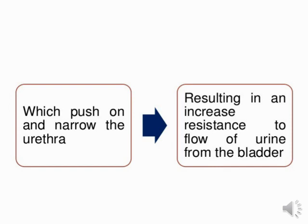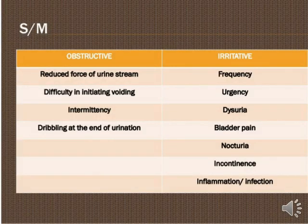Now we will see the signs, symptoms, and clinical manifestations of BPH. There are two kinds of symptoms. The first is obstructive symptoms: reduced force of urine stream — because of urethral narrowing — difficulty initiating voiding, intermittency, and dribbling at the end of urination. These are all the obstructive symptoms in BPH.